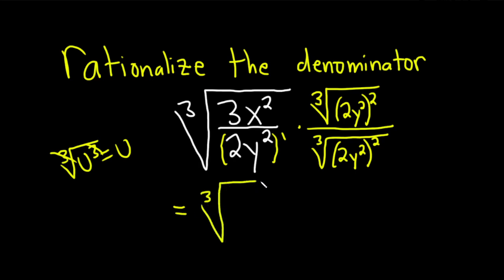Okay, so this is going to be equal to cube root. You can think of this as 2 cube roots, so when you multiply this times this you're going to get 3x squared, 2y squared squared.